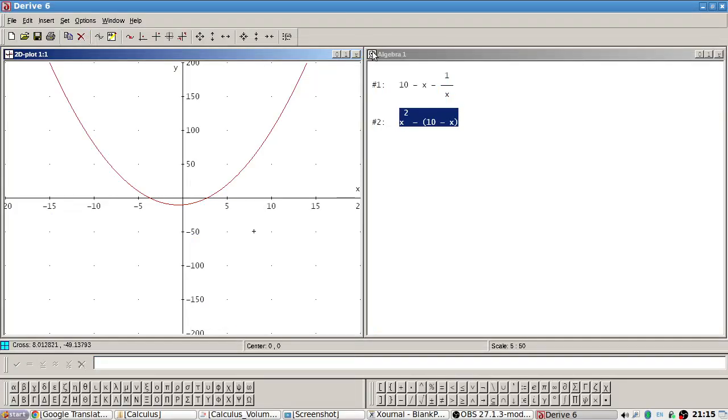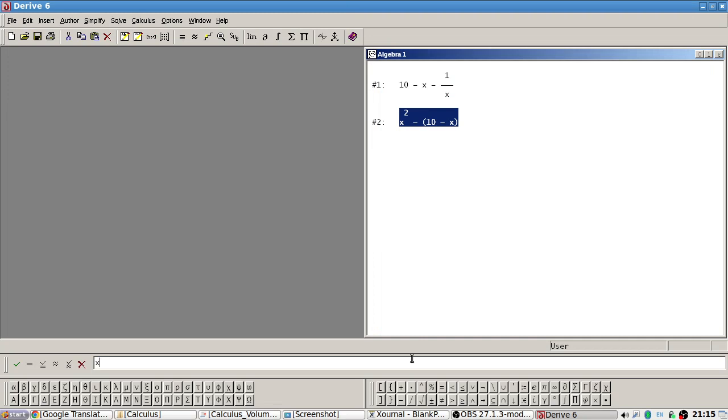So that's right, that's right and I'm pretty sure this one has to be right but let's just double check it since we're here. x squared times 10 minus x.